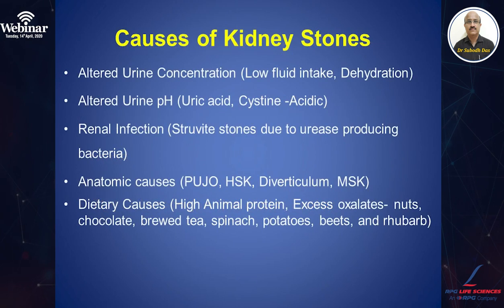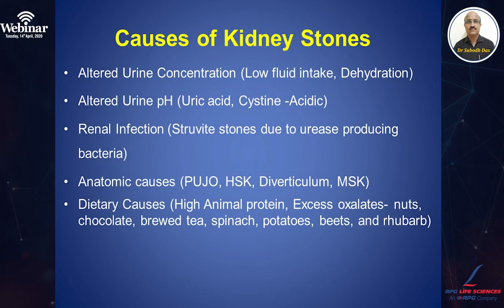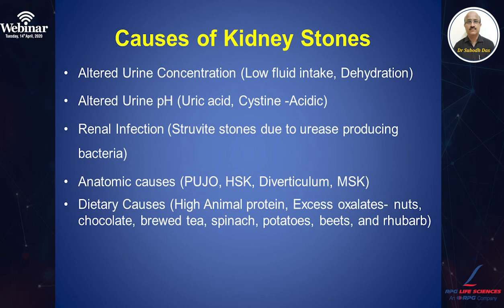What are the various causes of kidney stones? The most common is usually low fluid intake and dehydration, which alters urinary concentration — the more concentrated the urine, the more likely the patient is to have stones. Altered urinary pH: uric acid, cystine, and aciduria are stones that occur in acidic pH. Recurrent urinary infections give rise to struvite stones — triple phosphate stones — due to urease produced by bacteria causing urinary infection. There are also anatomical causes like pelviureteric junction obstruction, horseshoe kidney, bladder diverticulum, and medullary sponge kidney, all of which can cause urinary stone disease.